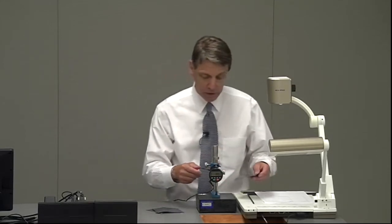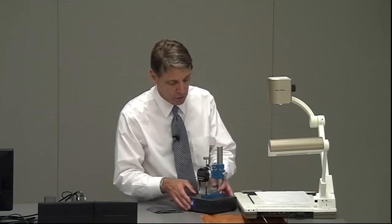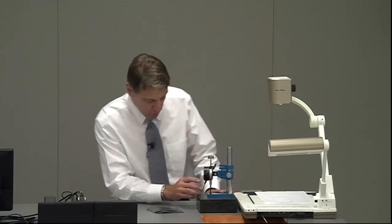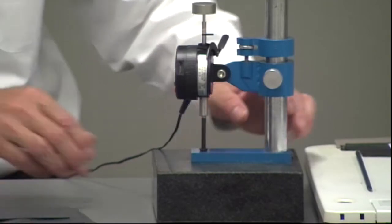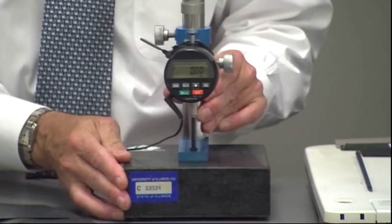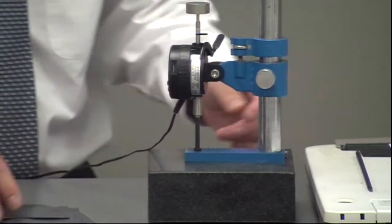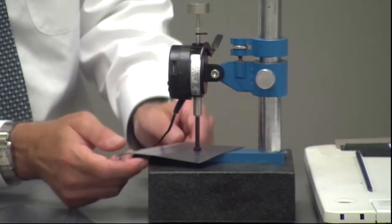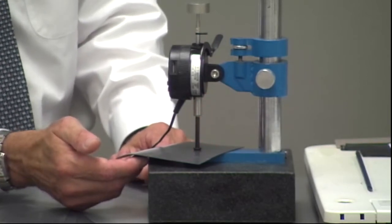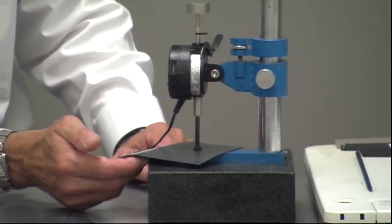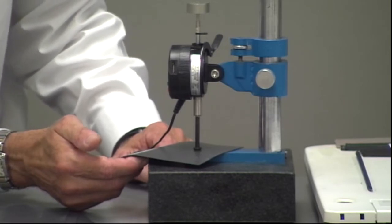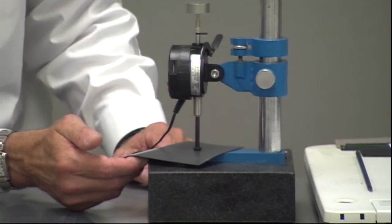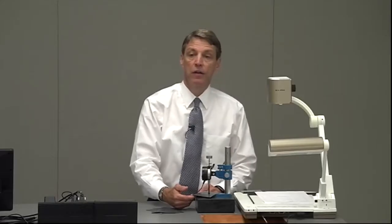Each specimen is placed in the device. First the device is zeroed so it reads zero right now, and then the geomembrane is placed in. The geomembrane is just lightly held in place for five seconds and the digital dial gauge is read. In this particular case, 0.728. That's specimen number one.